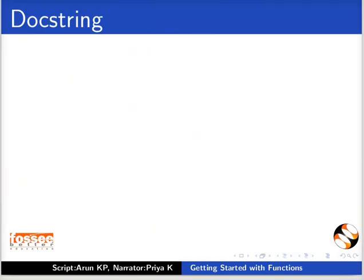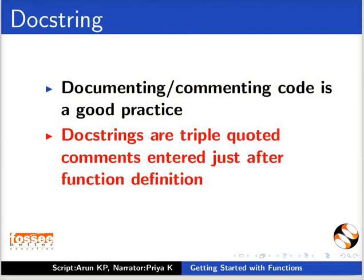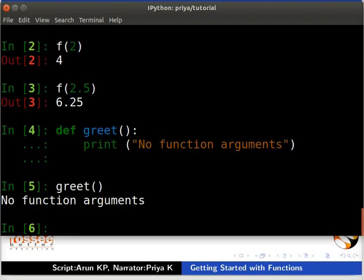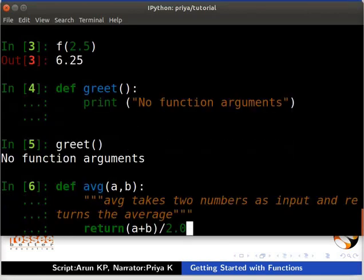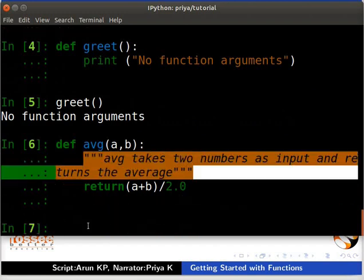Next, we will learn how to comment in a code. Documenting or commenting code is a good practice. Doc strings or triple quoted comments entered just after the function definition. It implies what the function does. Let us write a function which returns average of two numbers. Type the code as shown and press the ENTER key two times.